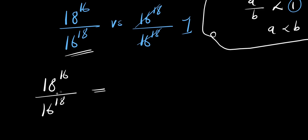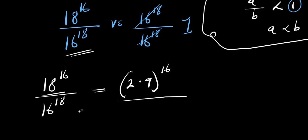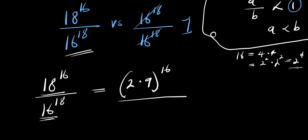We can express 18 as the product of 2 and 9, so we have (2 × 9)^16. For 16, we note that 4 = 2^2, so 4 × 4 = 2^2 × 2^2 = 2^4. Therefore 16 = 2^4, giving us (2^4)^18 in the denominator.